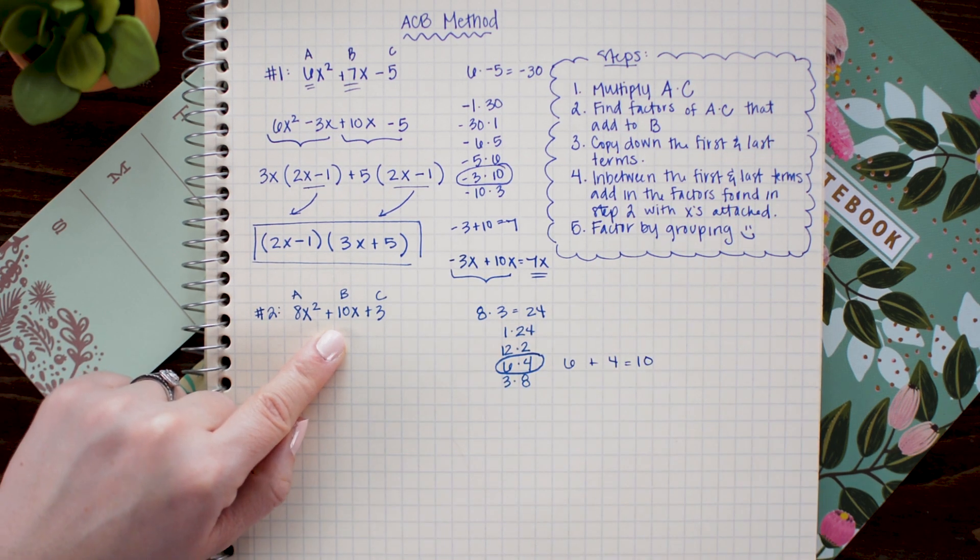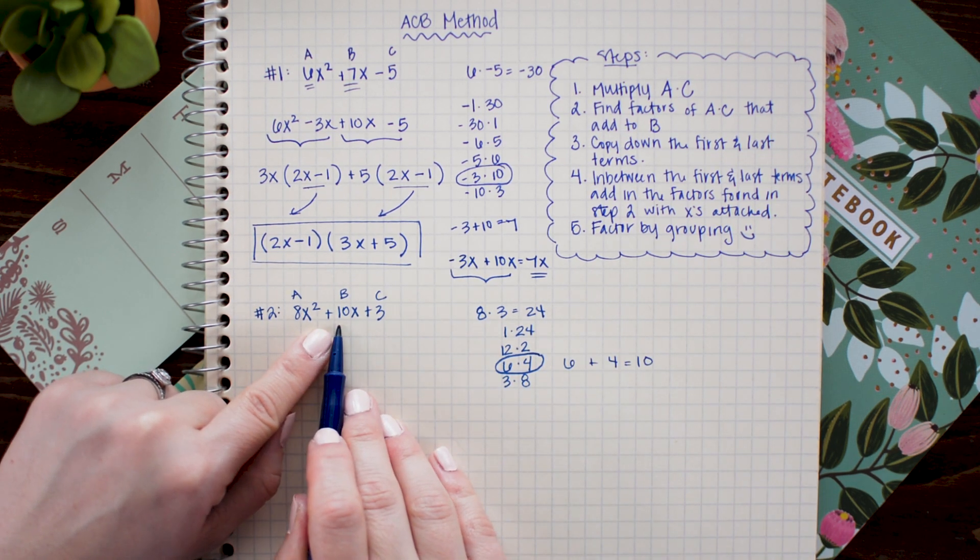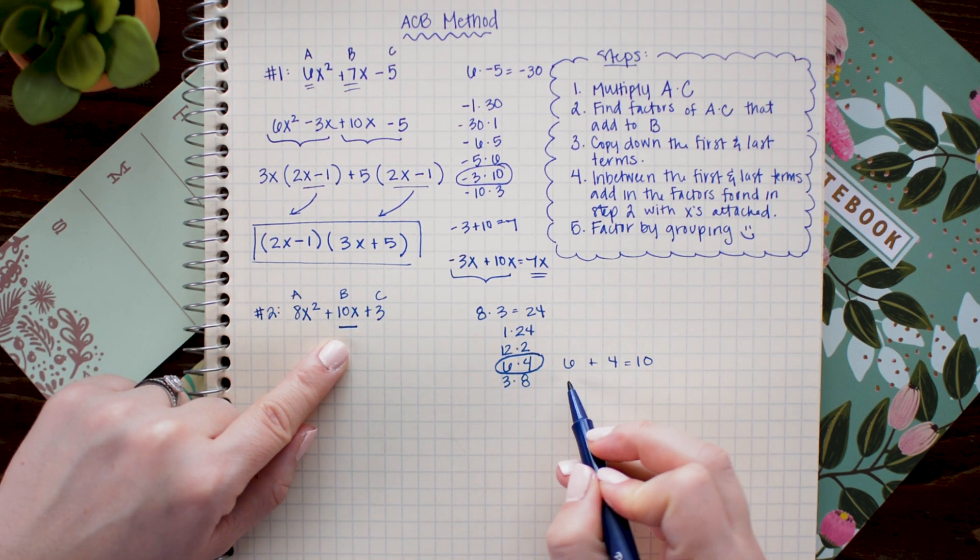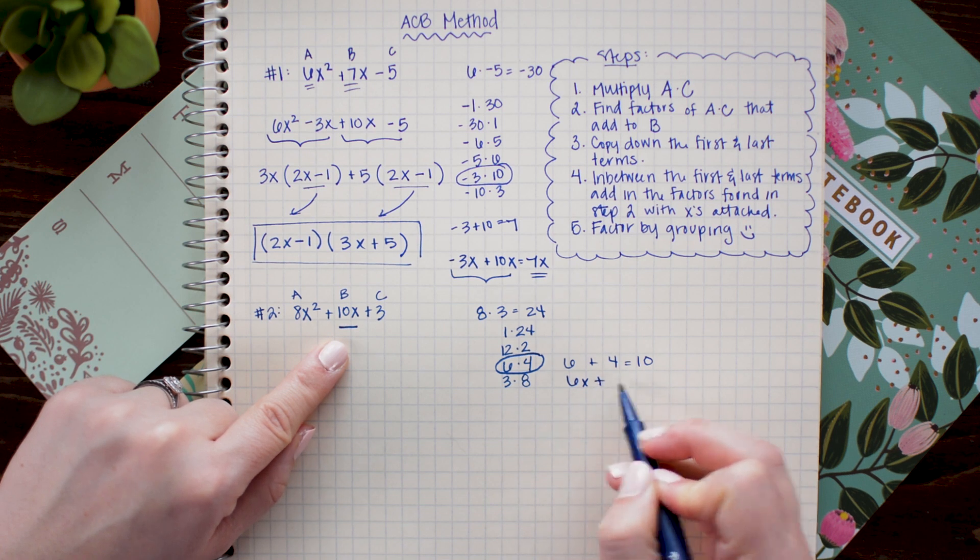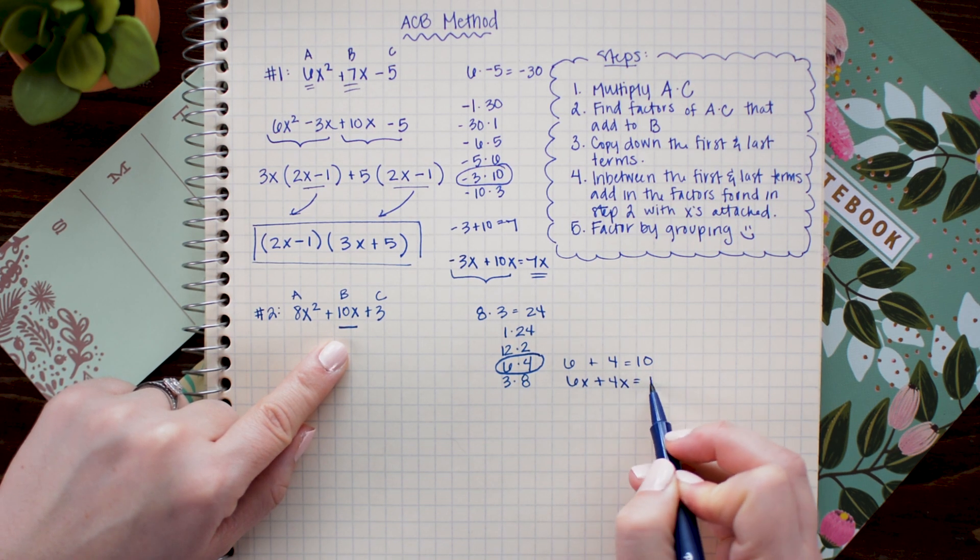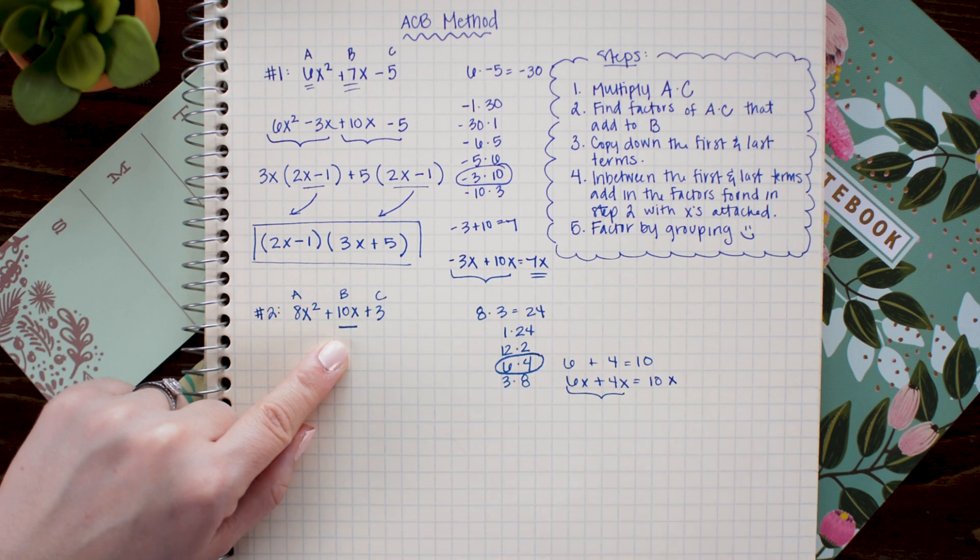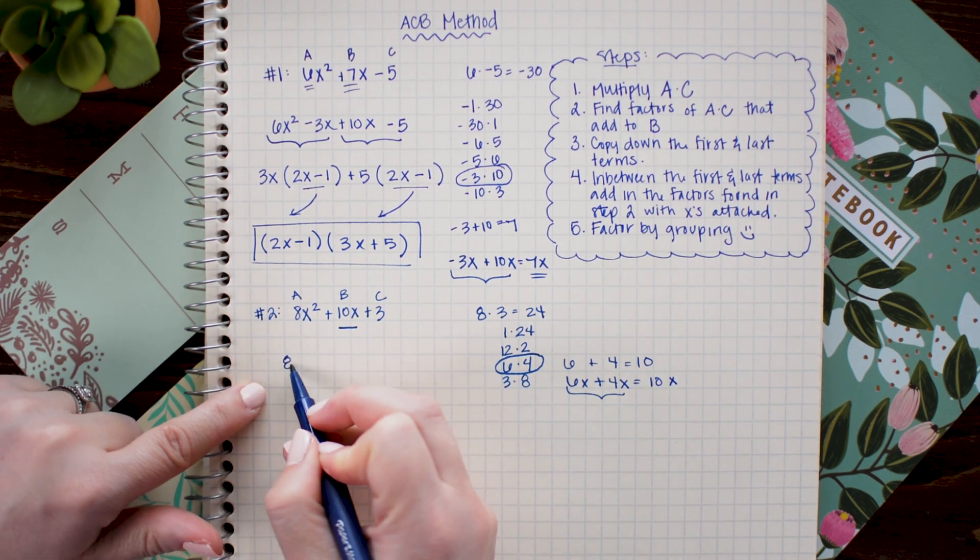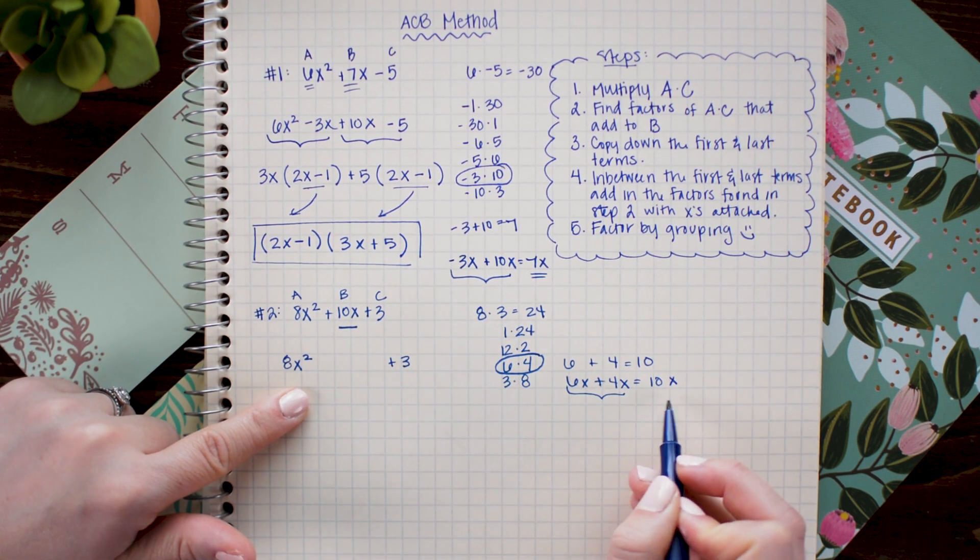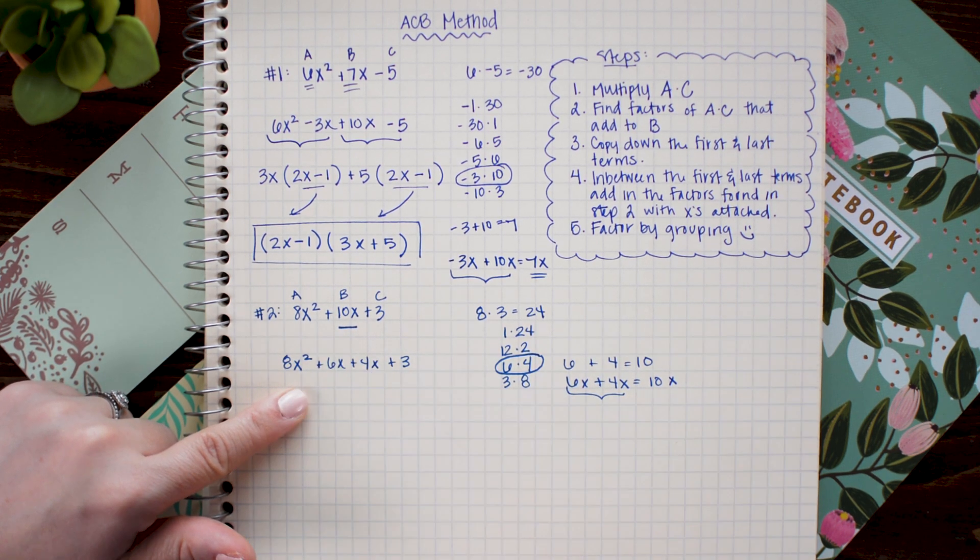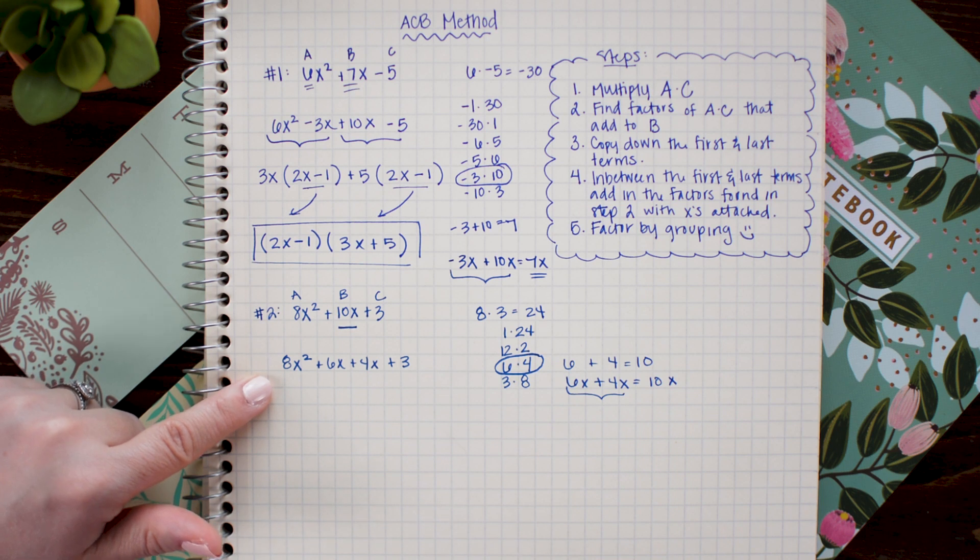Now remember what we're really doing is we are going to replace 10x with 6x and 4x. So 6x plus 4x equals 10x. And in the next step this is going to be our substitution. So instead of 10x I'm going to write 6x plus 4x. And lastly we just perform factor by grouping.